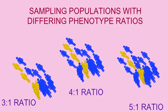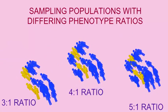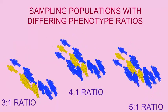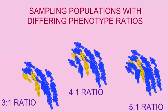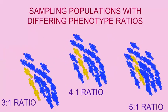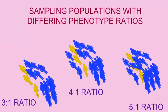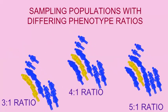In this first population, there is a 3 to 1 ratio of the individuals who are indicated in blue, perhaps with a dominant phenotype, and the individuals represented in yellow, perhaps indicating the recessive phenotype.